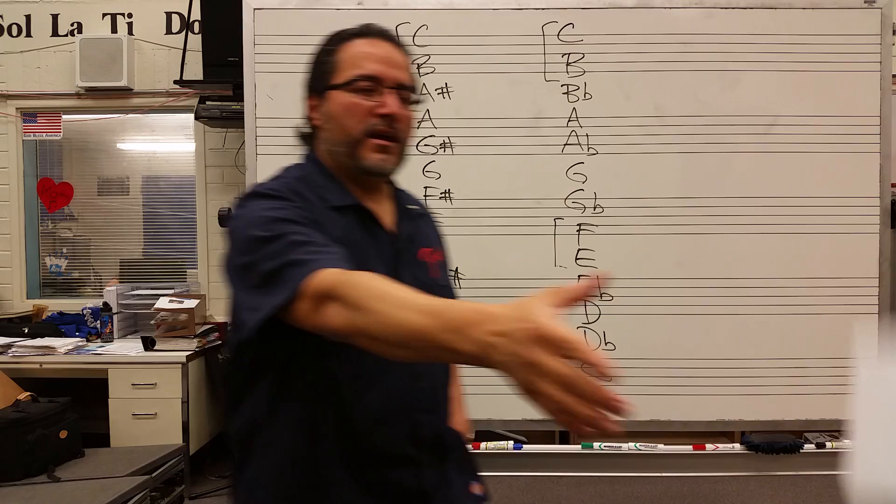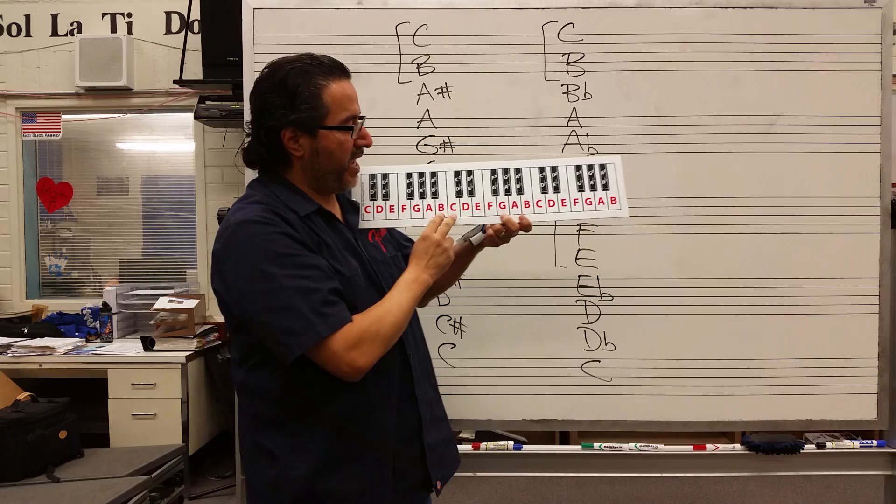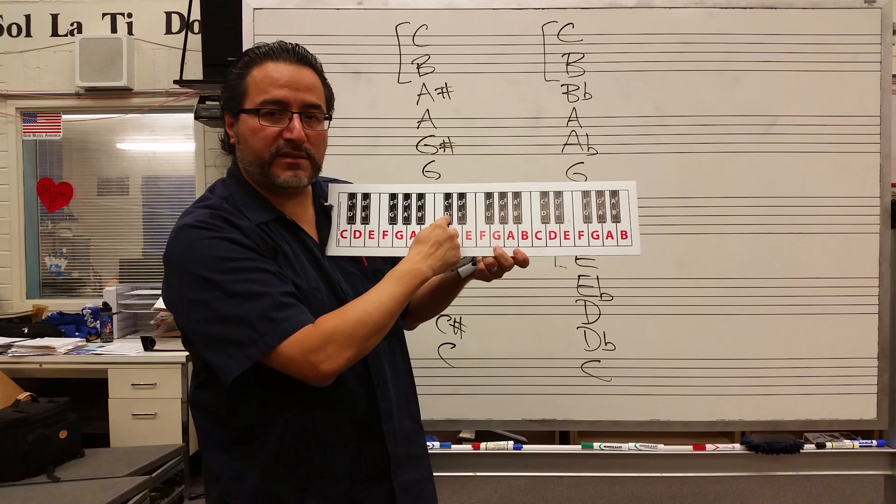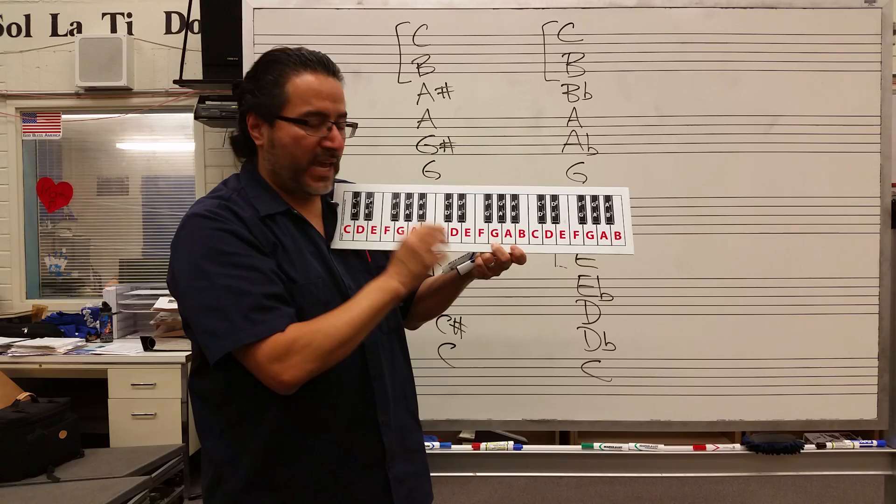From E to F is a natural half step. If it appears on the piano keyboard with no black key in the middle, from C to B or B to C is also a natural half step. So always between B and C, and E and F, you won't have a black key, so that's going to be a half step.